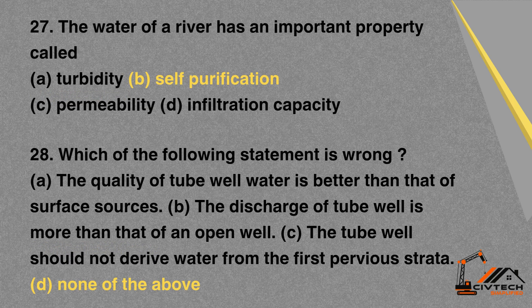MCQ 27: The water of a river has an important property called — A. Turbidity. B. Self-purification. C. Permeability. D. Infiltration capacity. Correct option: B. Self-purification.